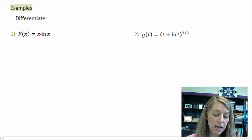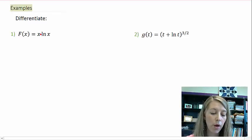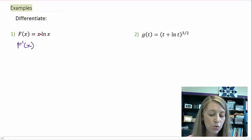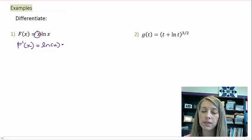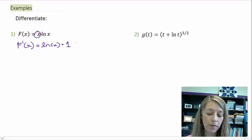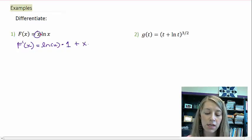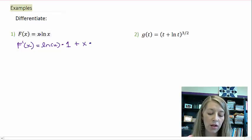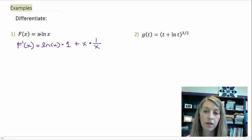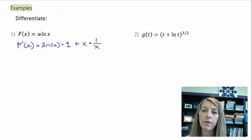This is x times natural log of x, which means I have a product rule. Product rule says the original of the second — so natural log of x — times the derivative of the first, where the derivative of x is just 1, plus the original of the first times the derivative of the second. We just learned that the derivative of natural log of x is 1 over x. I've utilized my product rule and my natural log rule.